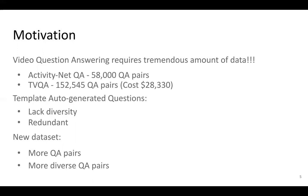Existing human-labeled Video QA datasets are either not big enough or cost a huge amount of money. For example, there are only 58,000 QA pairs in the ActivityNet QA. As for the TV QA dataset, according to their paper, it cost around more than $28,000 US dollars, which is really expensive and not easily affordable by most people or labs. Although there are some existing methods to automatically generate questions, these questions lack diversity and are redundant.